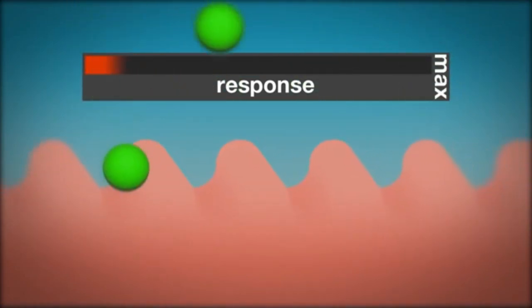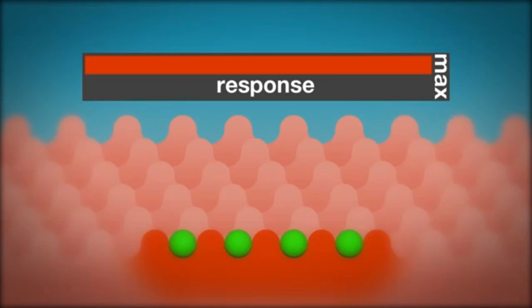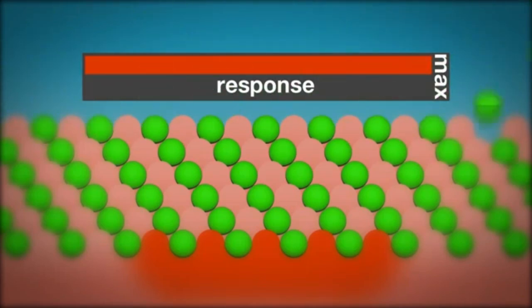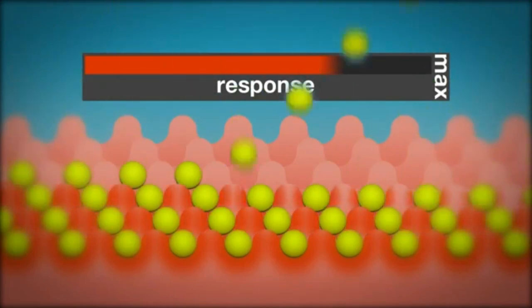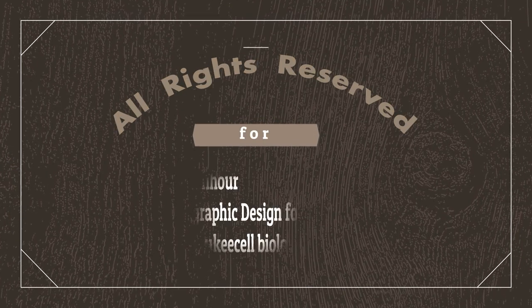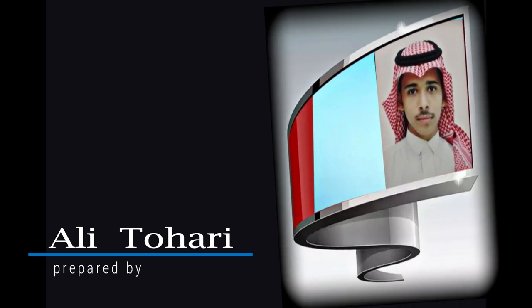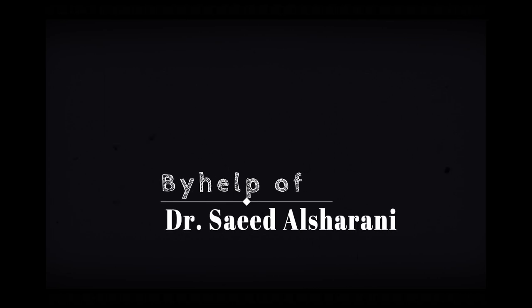However, there are often more receptors on a cell or tissue than are needed to produce a maximum response. These are known as spare receptors and the tissue is said to have a receptor reserve. In this case, adding more full agonists cannot increase the response, but adding more partial agonists will increase the response.